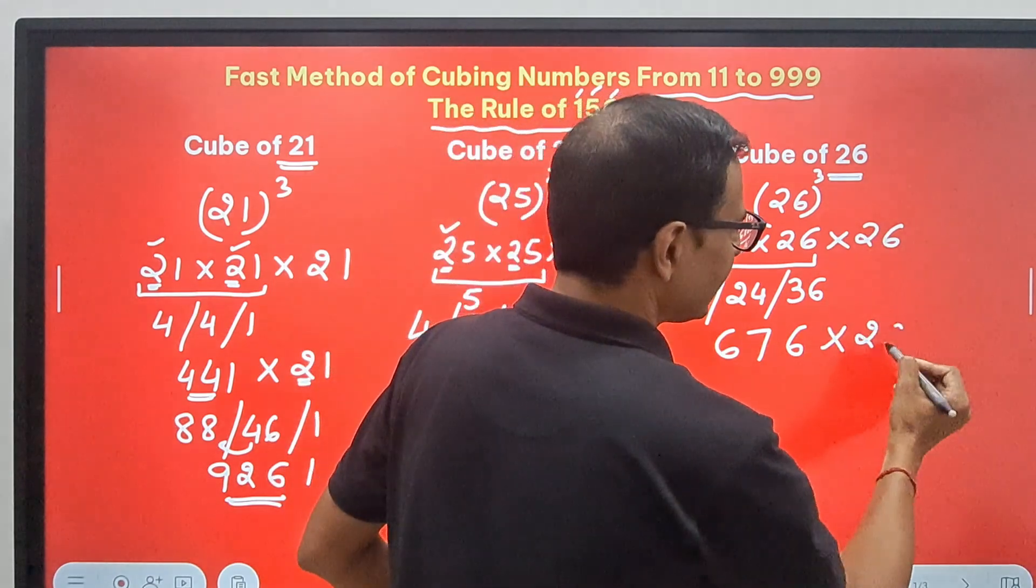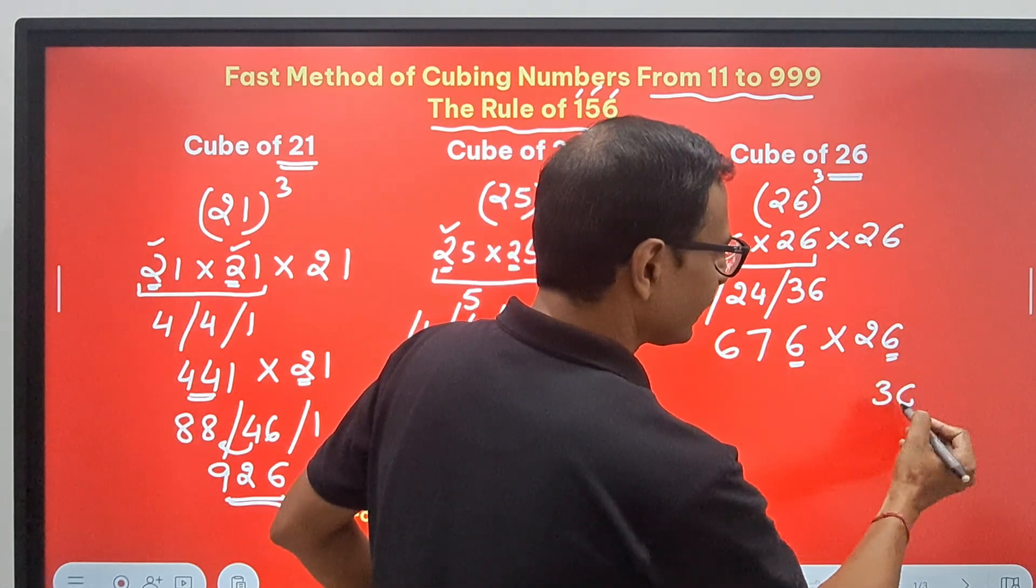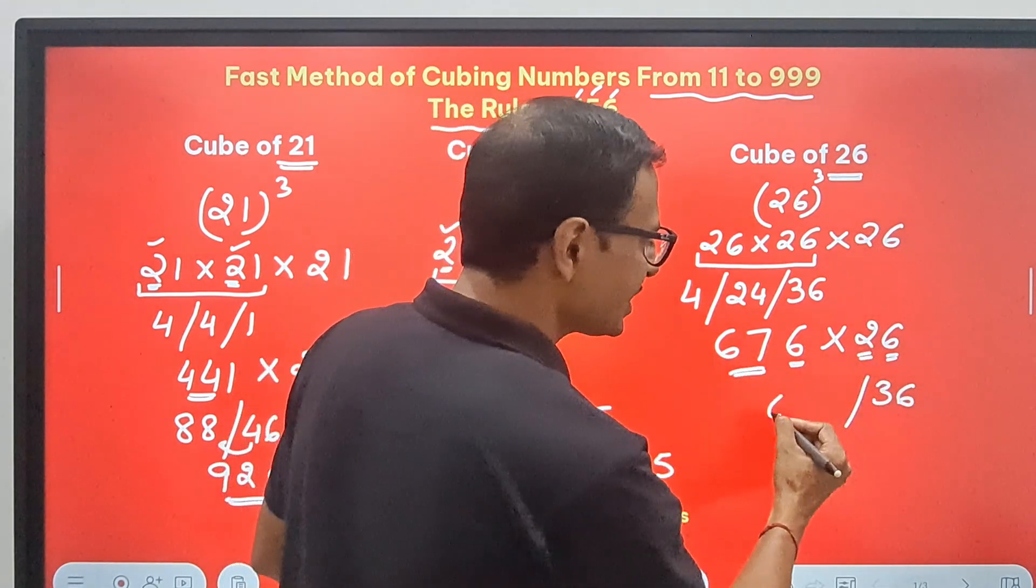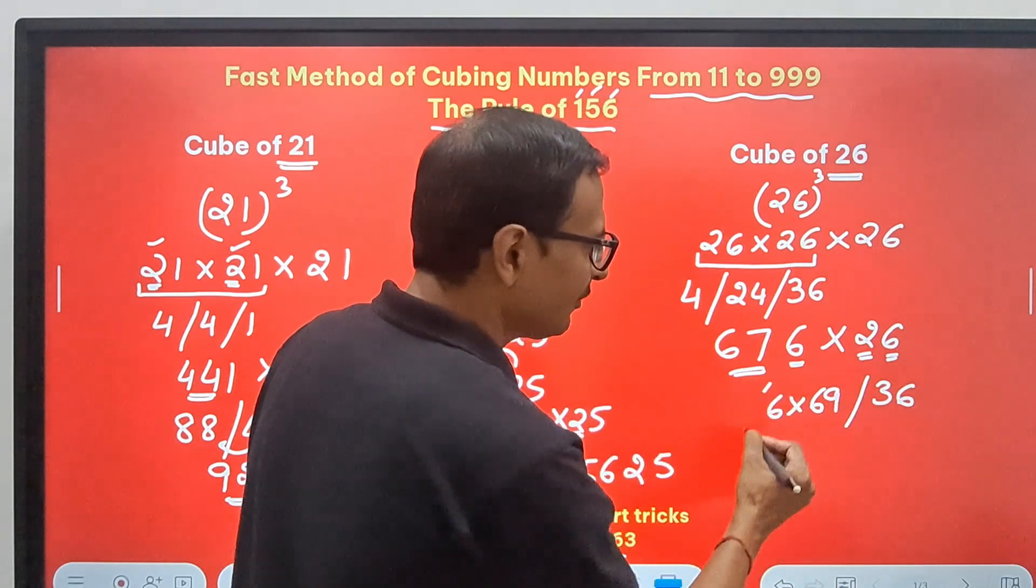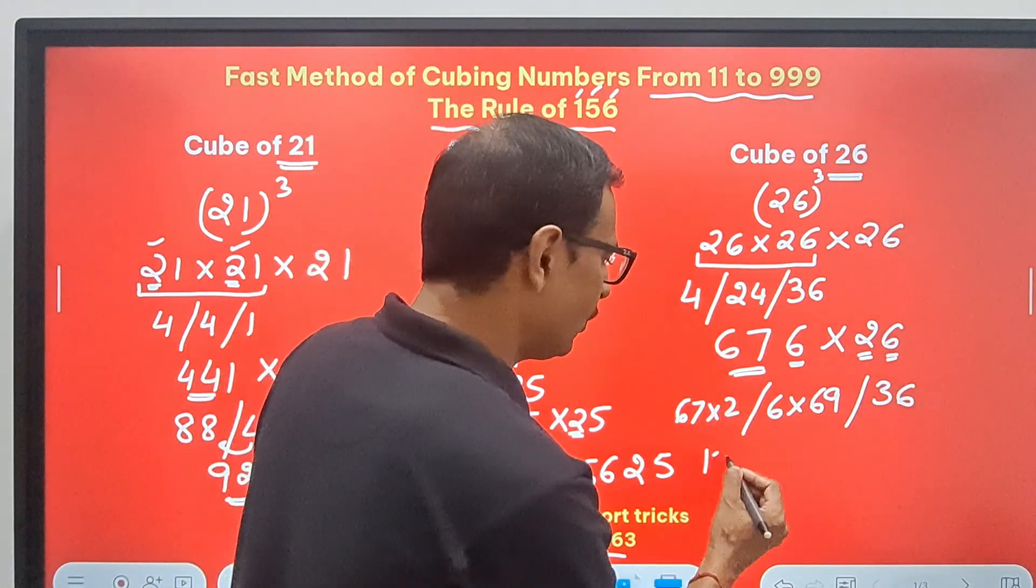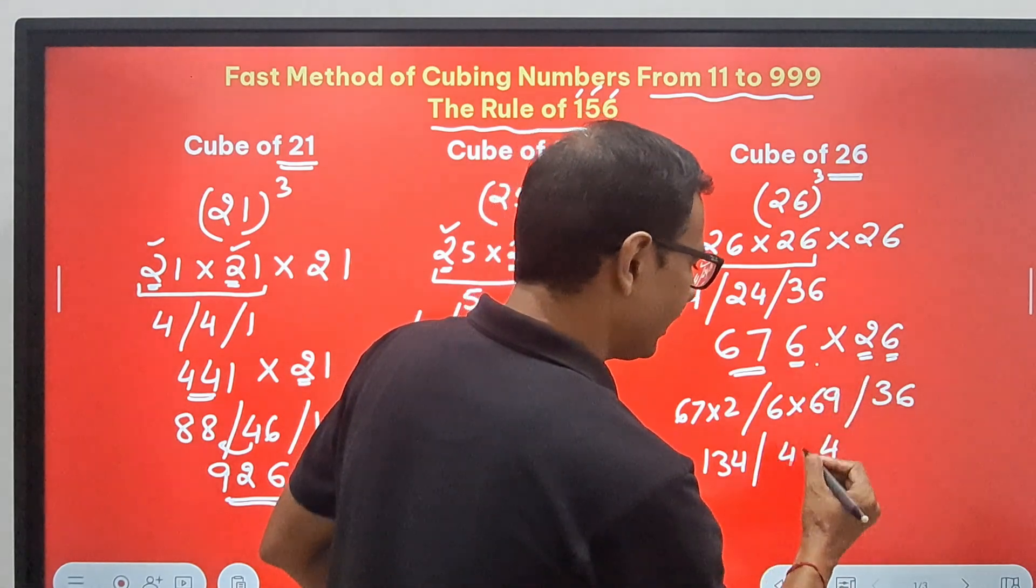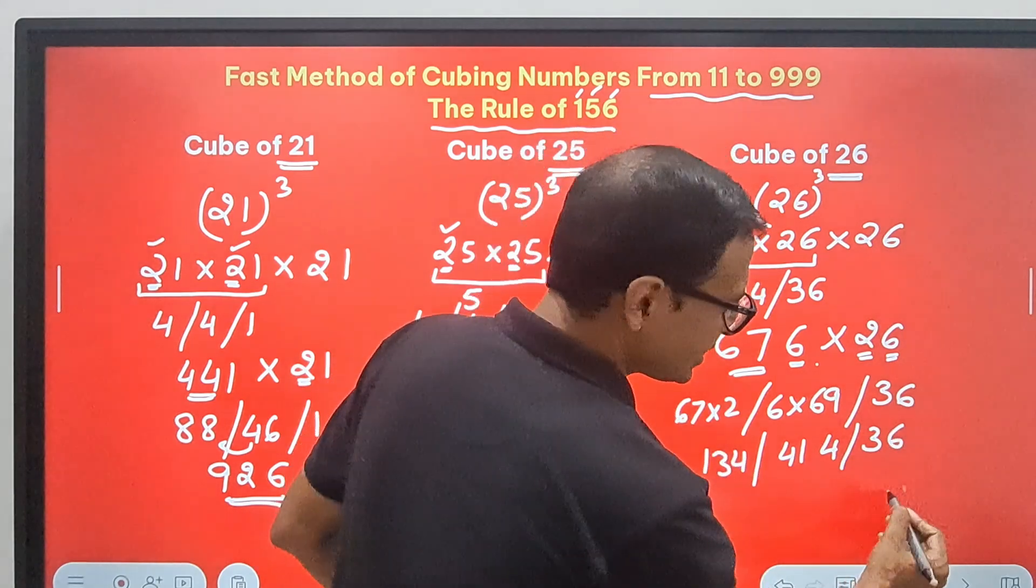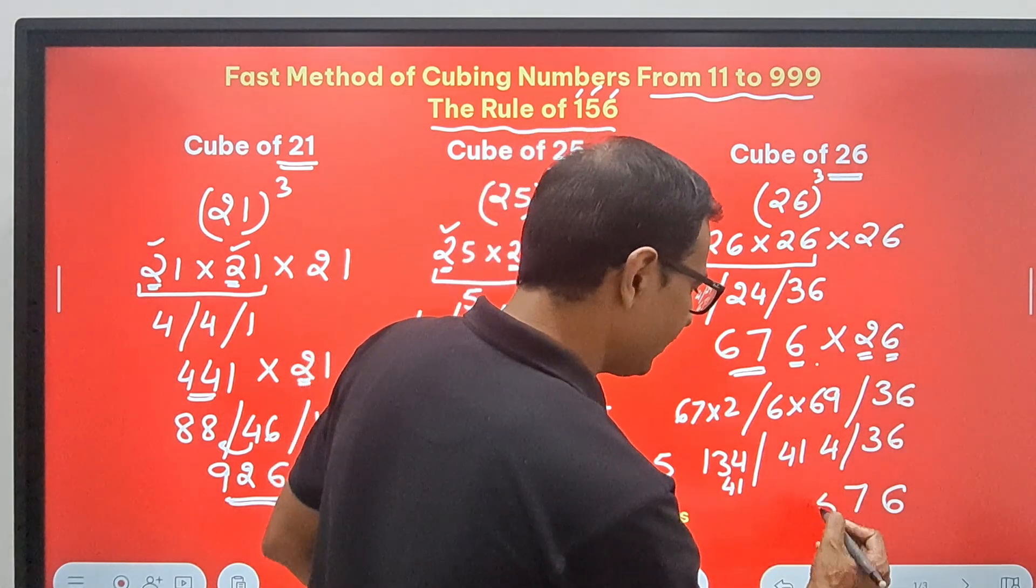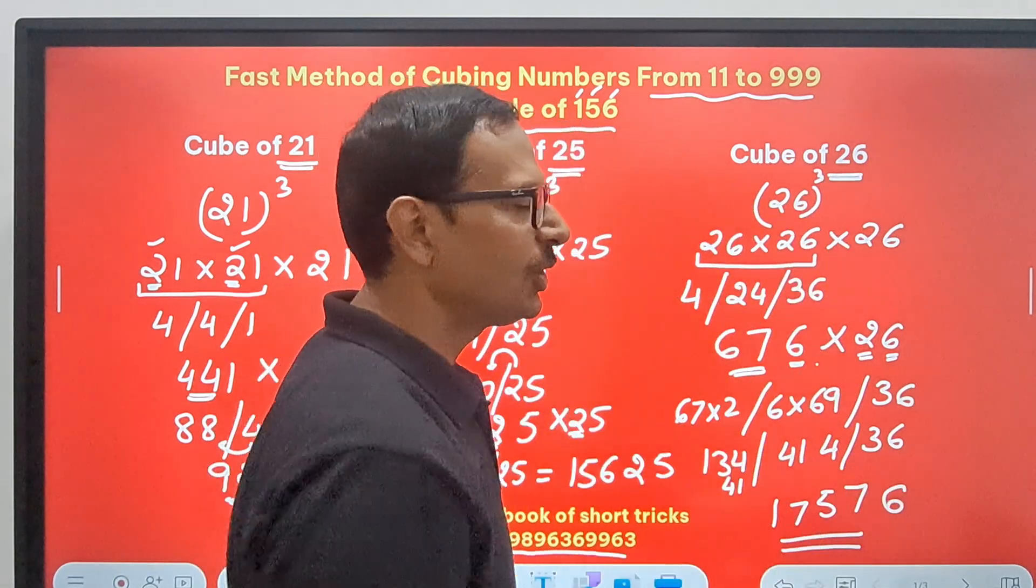And then multiply that by 26 again. Again 6 times 6. Forget these two 6s. Just write a 36. And then the remaining part, 67 plus 2 is 69, but you have to do 6 times that sum. And finally, 67 times 2. This becomes 134. And this becomes 6 nines are 54. So 5, 36 and 5, 41, and then 36. So you have a 6, then 3 goes here and this becomes 7, 41 gets carried forward. So this is 5, this is 7, and this is 1. So 1, 7, 5, 7, 6 is the cube of 26.